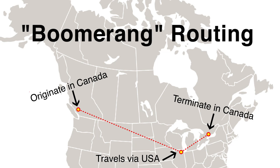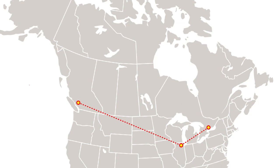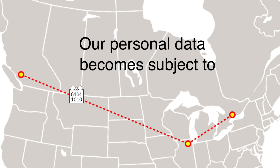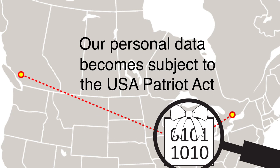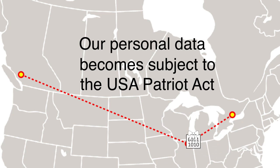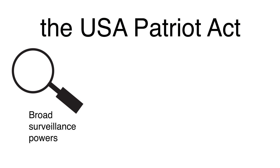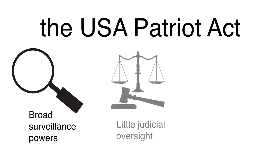Canadians who value their privacy may be concerned about boomerang routing because it means our personal data becomes subject to the USA PATRIOT Act. This controversial legislation grants US authorities broad surveillance powers, enabling them to secretly intercept and analyze personal communications with little oversight or accountability.